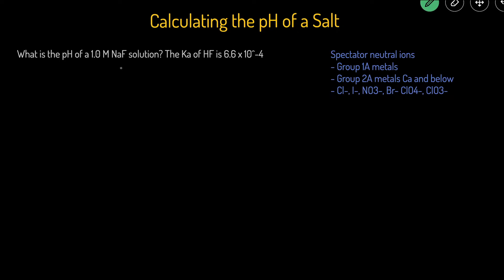So the first thing that we have to do is cross out any of the spectator neutral ions and see what's left over. I listed the spectator neutral ions here. They're going to be the group 1A metals, the group 2A metals that are calcium and below, and then these anions right here.